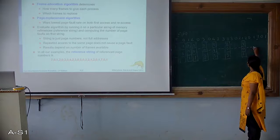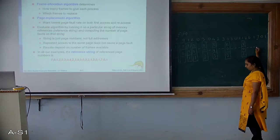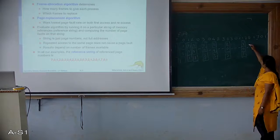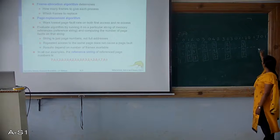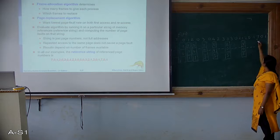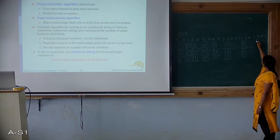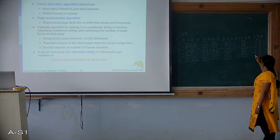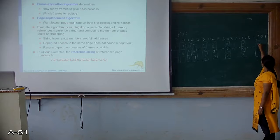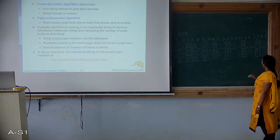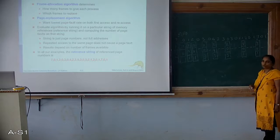2 is there, 0 is there, 1 is there. Now we need 7 — which of these 3 numbers will not be used next? After 7, 0 and 1 are required but 2 is not required. So we replace 2 with 7. Frames: 7, 0, 1. 0 and 1 are already there — no need of page replacement.